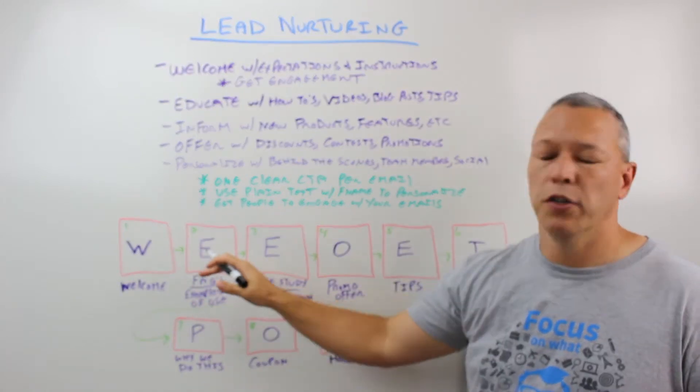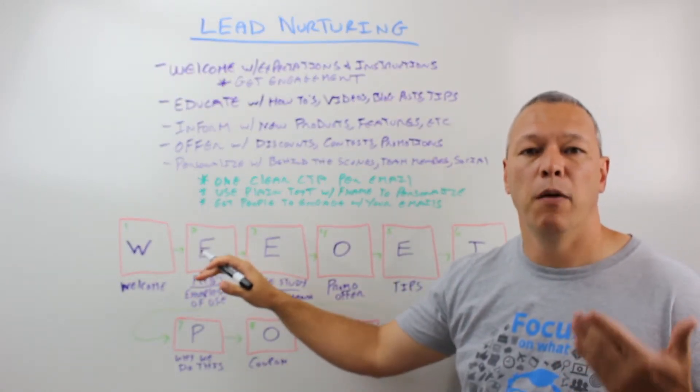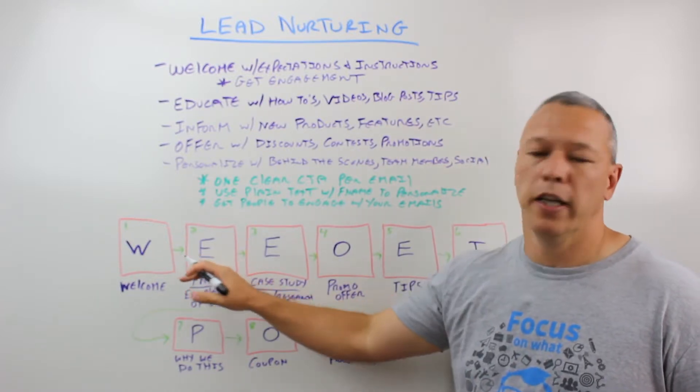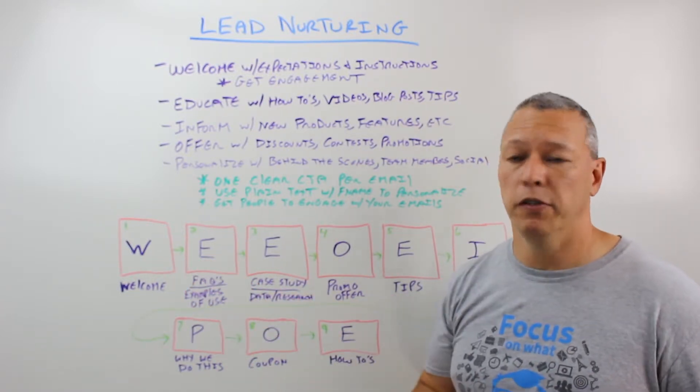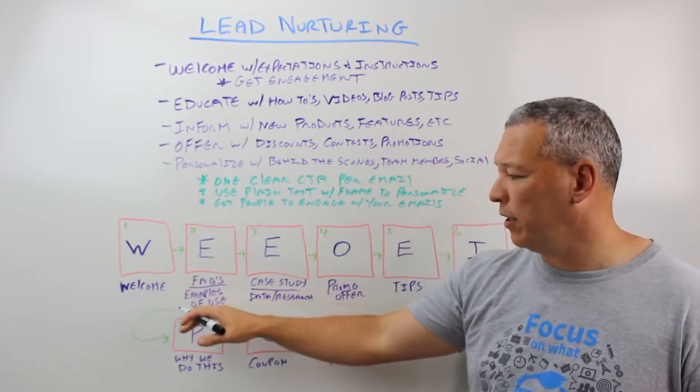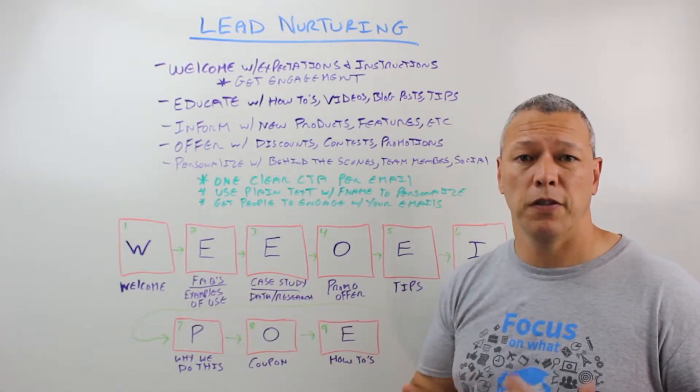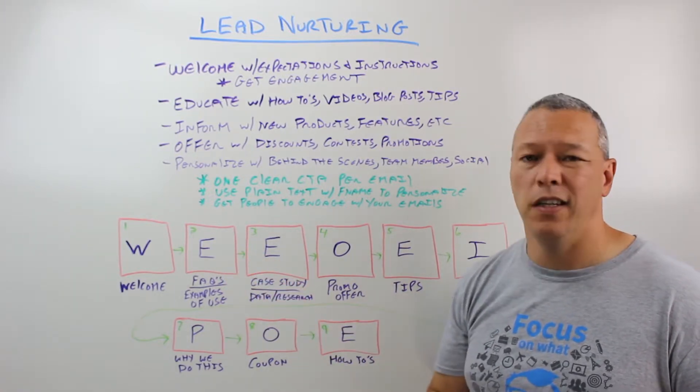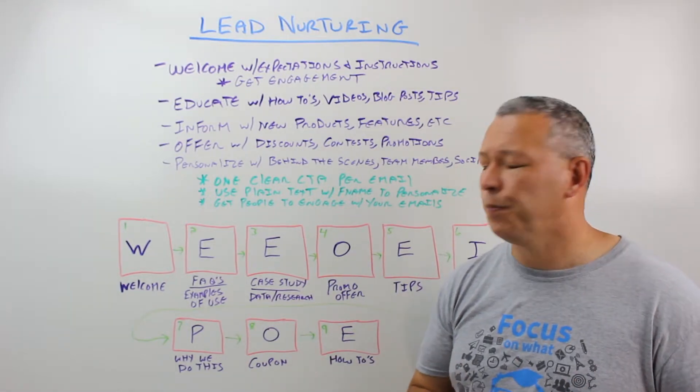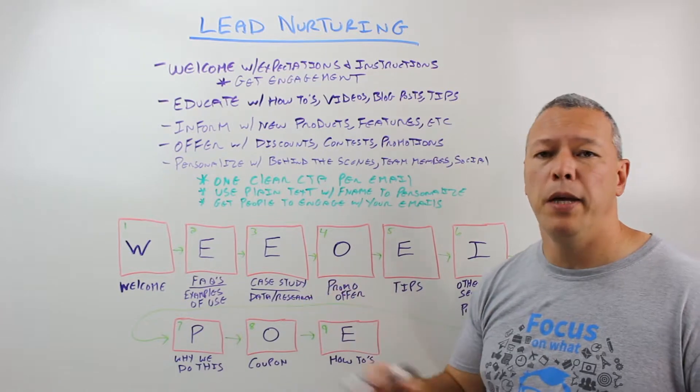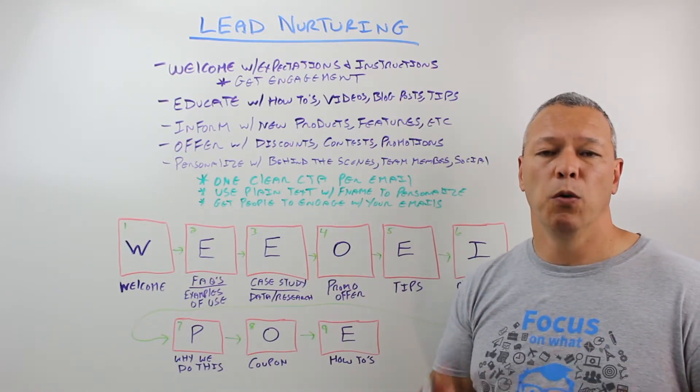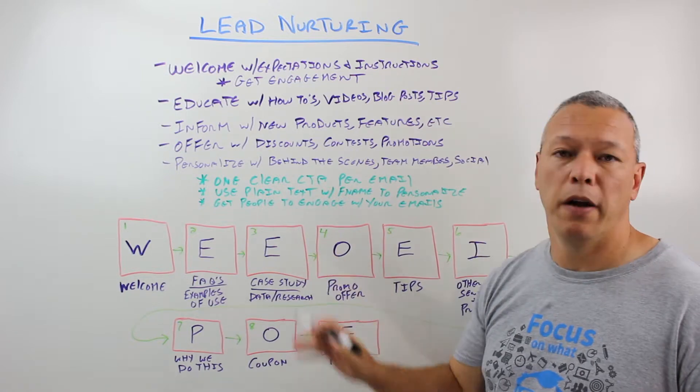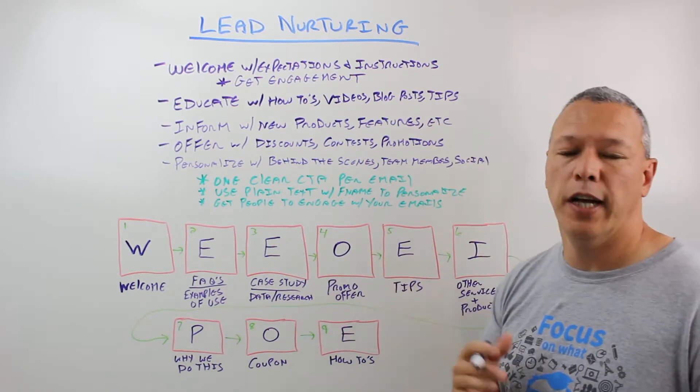E is for education. You want to start educating them, giving them as much value as you can up front. Because you want to train them to start opening your emails. You want to deliver as much value as you can right off the bat to train them to start looking out for your email so they can learn more about whatever they're interested in. Here we might send frequently asked questions, examples of how to use the product or service that you sell, some use cases. Same thing, I'll send another one where you talk about case studies, data, research, statistics, things like that to keep them interested. And then maybe hit them up with an offer. Maybe you have a discount, a coupon, or this week we have a special going on, something like that. Obviously that's the purpose of this, try to get them to buy, so you can throw one out there and see what happens.